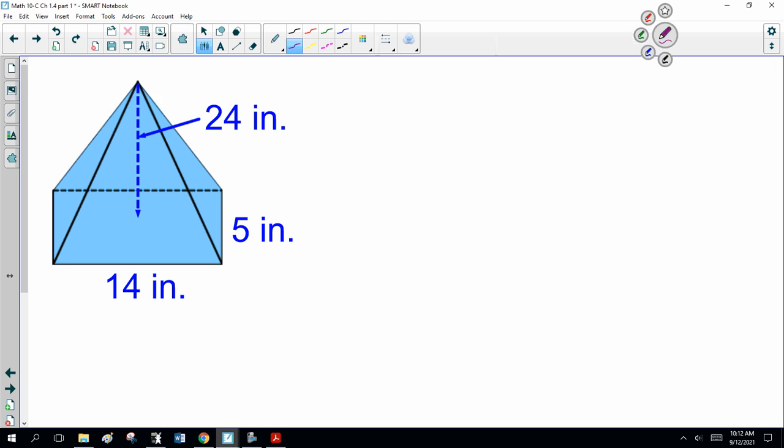So here is a rectangular pyramid. Notice the base is 14 by 5, which means you have two different slant heights, because this slant height goes with this rectangle. This is a triangle, this is 24, and going across, this will be half of 14 or 7, this is going to be slant 1.